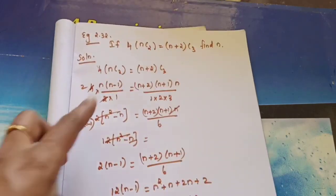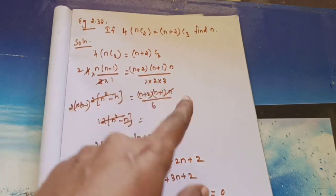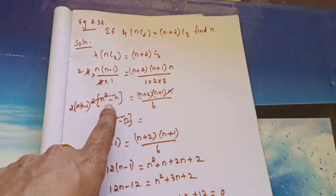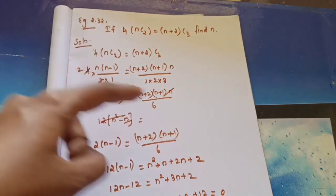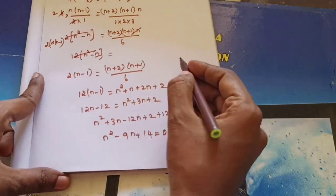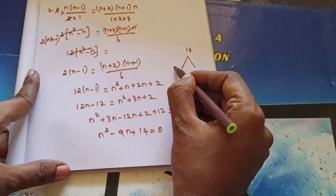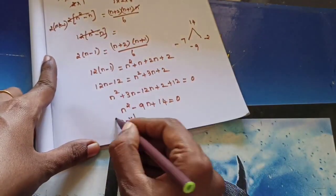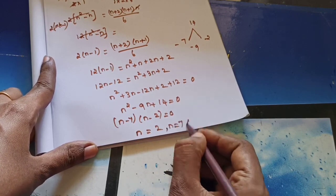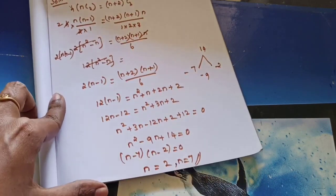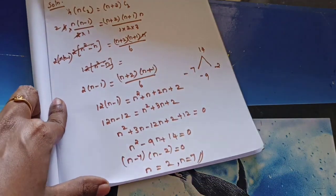Factoring n² − 9n + 14 = 0 gives (n−7)(n−2) = 0. So n = 7 or n = 2. Both answers are positive, so both are valid. If a value were negative, we would reject it, but here both n = 2 and n = 7 are acceptable answers.